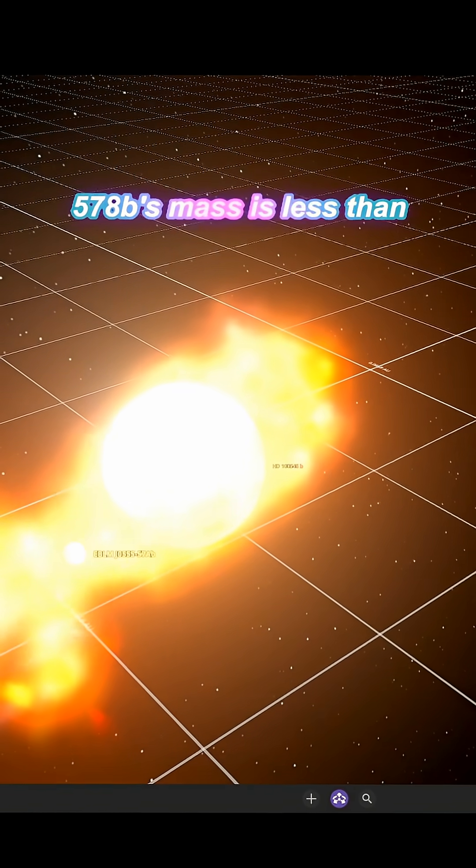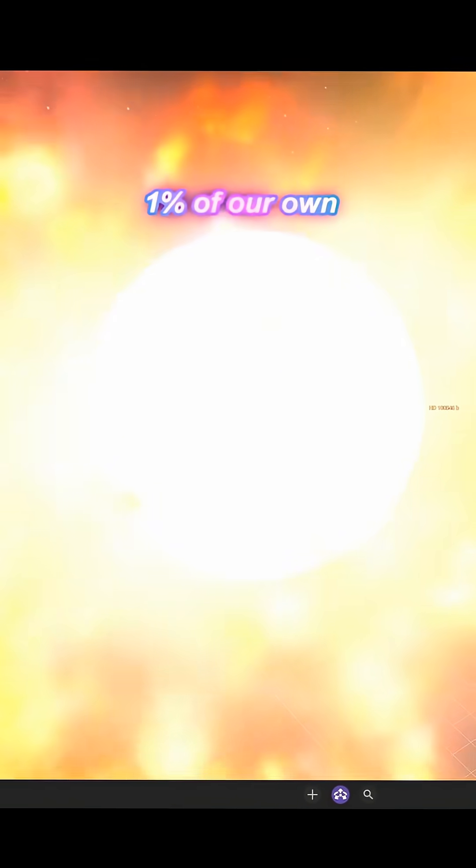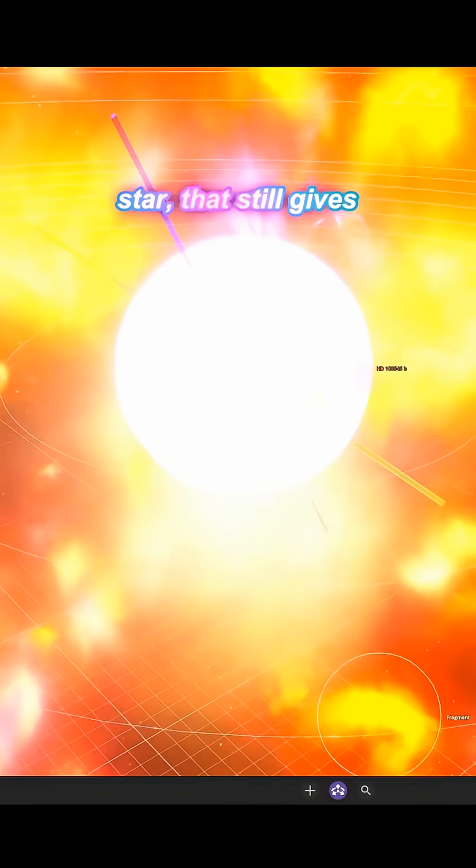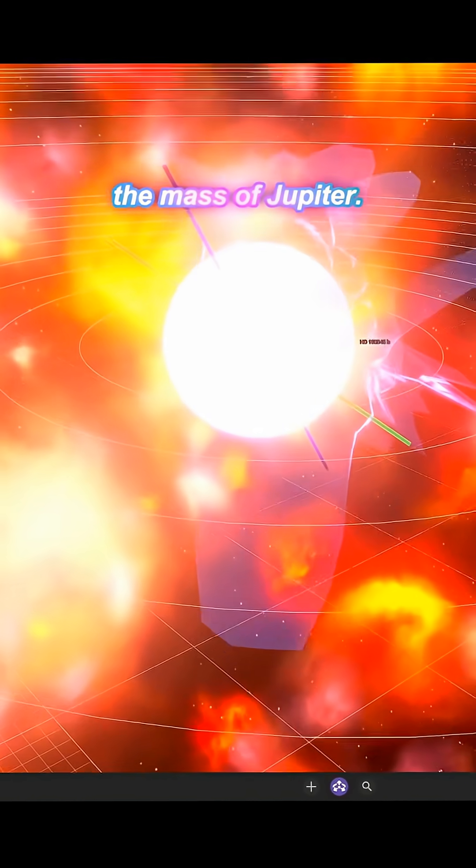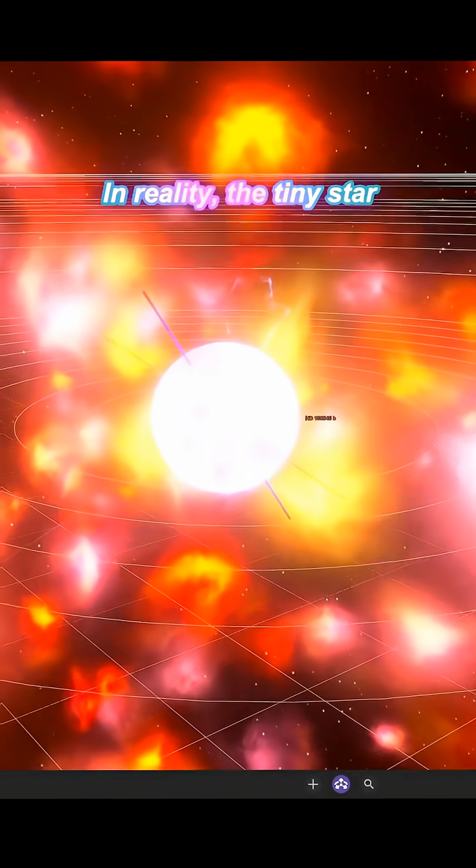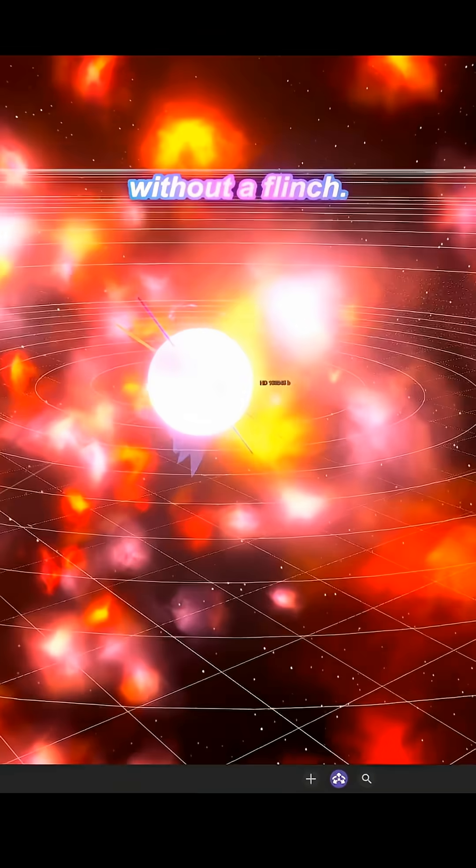Thing is, even though 578b's mass is less than 1% of our own star, that still gives it over 80 times the mass of Jupiter. In reality, the tiny star rips apart the gas giant without a flinch.